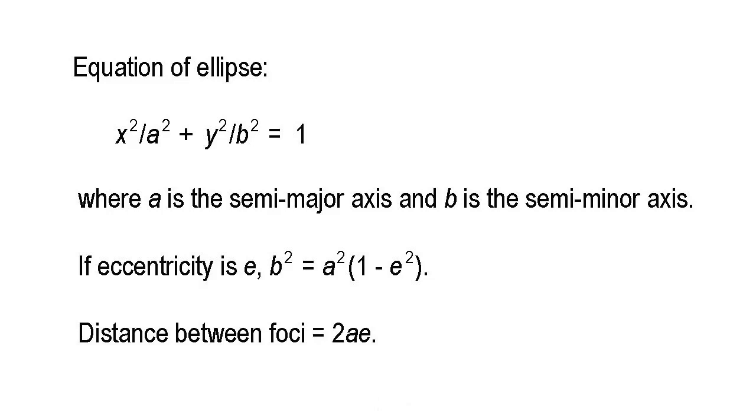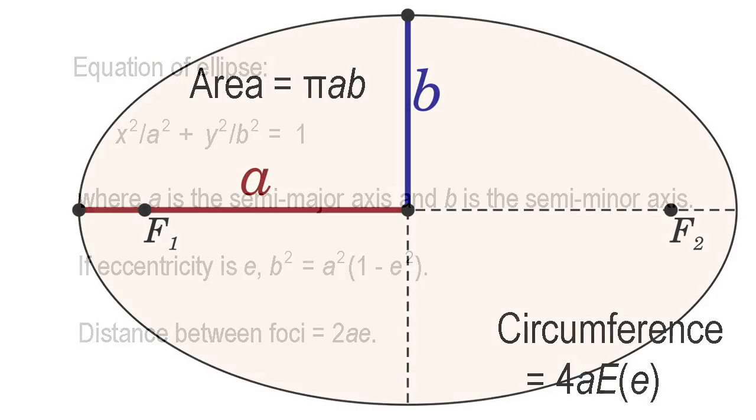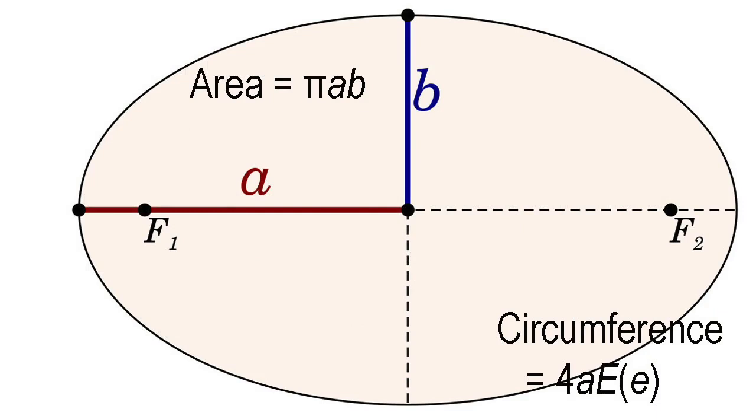The distance between the foci is 2ae. The area enclosed by an ellipse is πab. The circumference of an ellipse is 4aE(e), where the function E is the complete elliptical integral of the second kind.